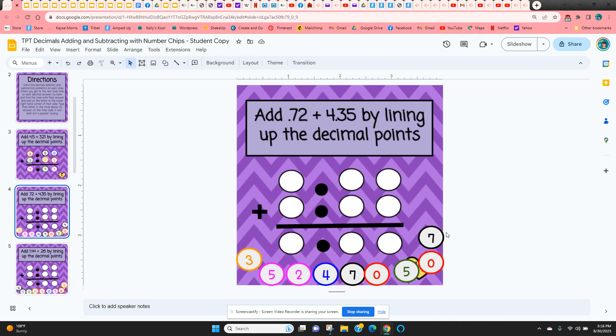The second one is seventy-two hundredths, so they need to know the seven goes here, the two goes here, and this place has to be filled with a zero.